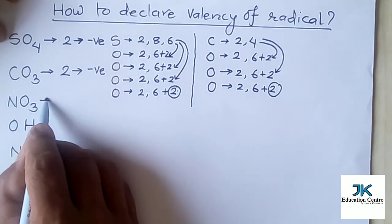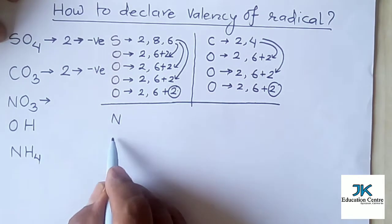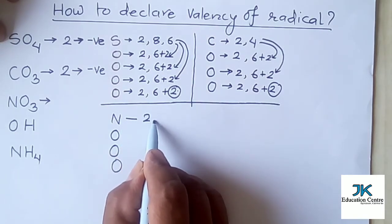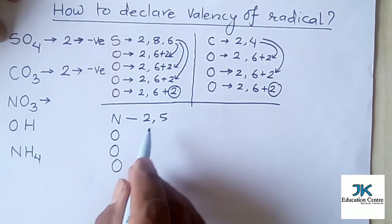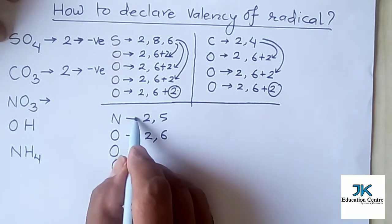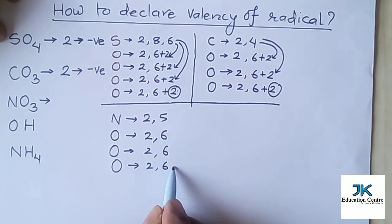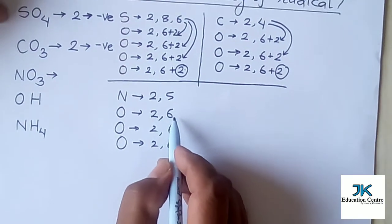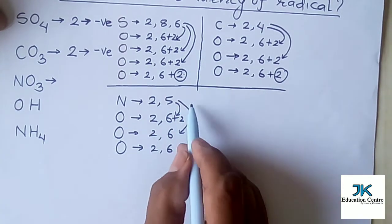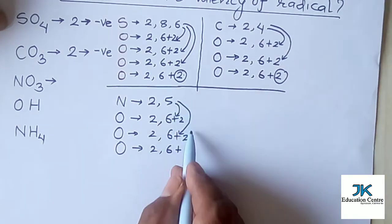Now let's talk about nitrate. Nitrate consists of nitrogen and three oxygen atoms. Nitrogen has atomic number 7, so its electronic configuration is 2 and 5 — the last orbit holds five electrons. Each oxygen has configuration 2 and 6. Two oxygen atoms each gain two electrons from nitrogen to form their octets, but the third oxygen can only gain one electron from nitrogen.